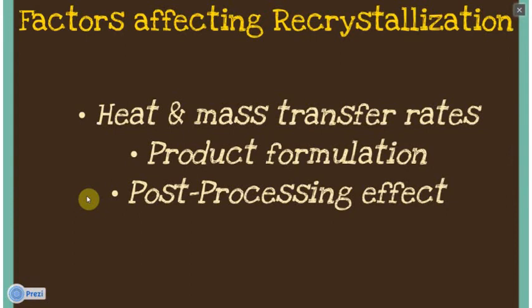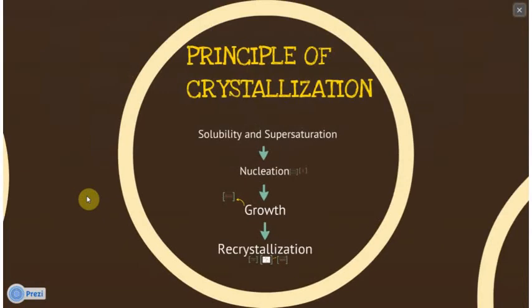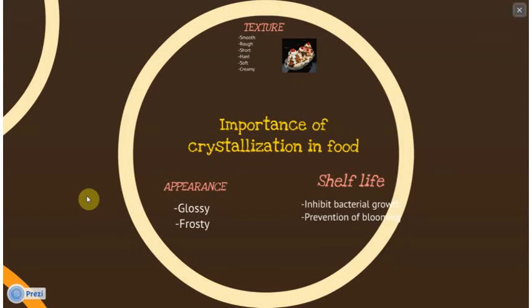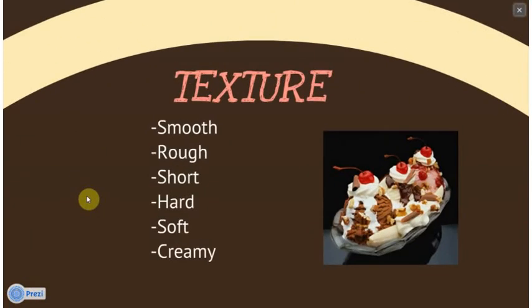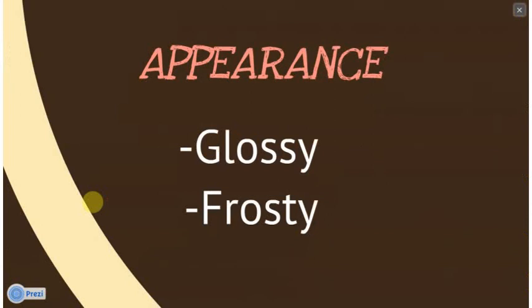So why do we go through all this explanation about crystallization? It is because it's important in food, as it affects the texture, appearance, and shelf life of food. In texture, small crystals can contribute to a smooth, creamy texture, but sometimes may cause a short texture in certain candies, while large crystals contribute to a rough, hard, or grainy texture. As for appearance, crystals can cause some food to appear glossy or frosty — like the frost you can see on your cereal — which is very important to study.